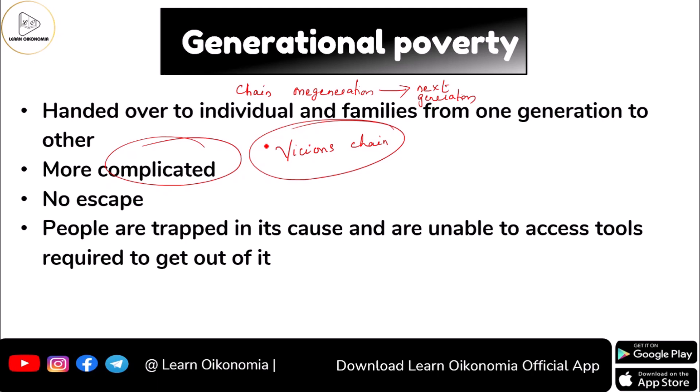Once a person is trapped in generational poverty, it is very difficult — not only for that person but also for his successors — to come out of that situation. People are trapped in its causes and are unable to access the tools needed to escape such a situation, making it very complex and complicated.